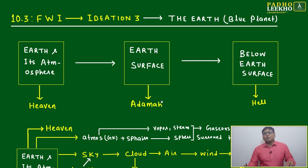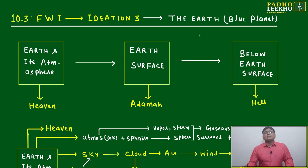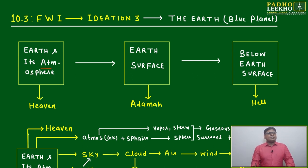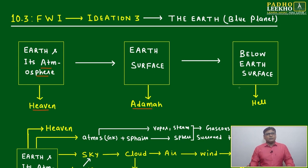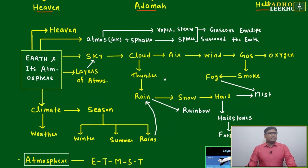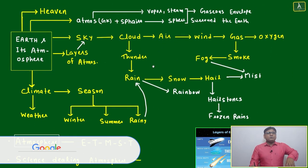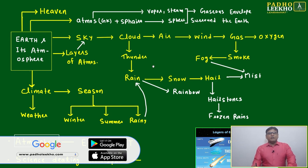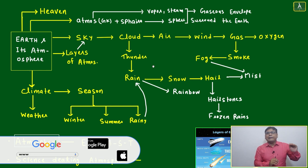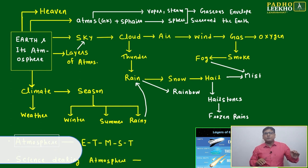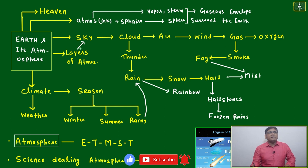In this edition, we will start to understand about the Earth — the blue planet — divided into three parts: Earth and its atmosphere, which can be called heaven; Earth surface; and below Earth surface, which can be called hell. These three idea units we will understand in this edition. We'll start with the Earth and its atmosphere, studying it in three idea units: above the earth, earth surface, and below the earth.